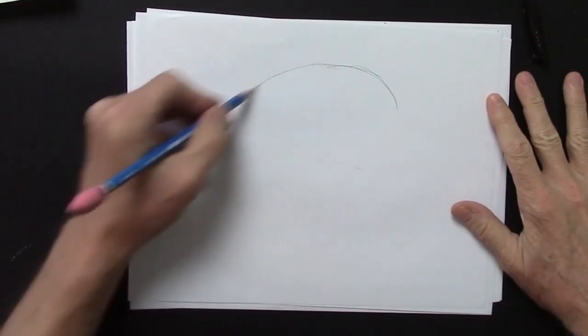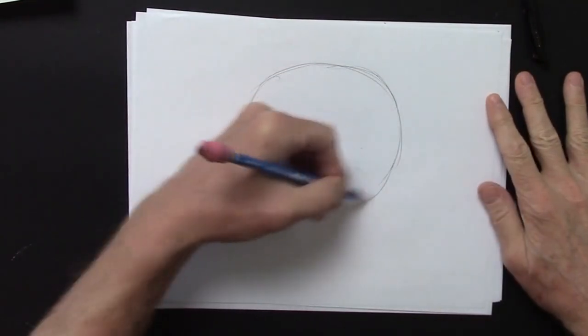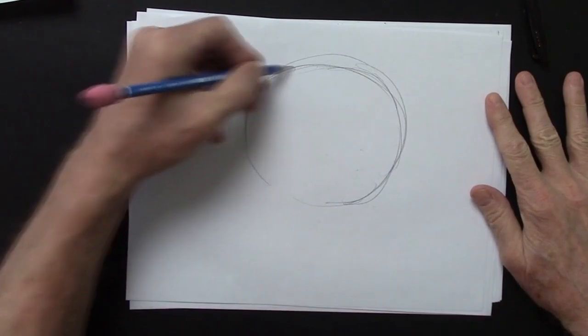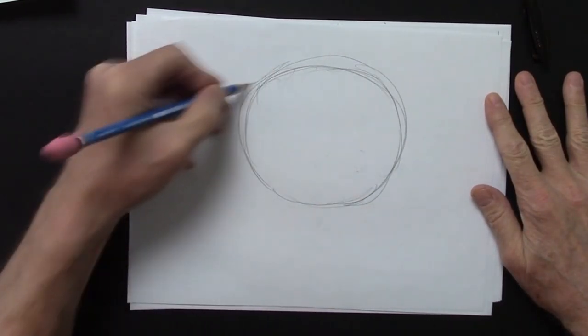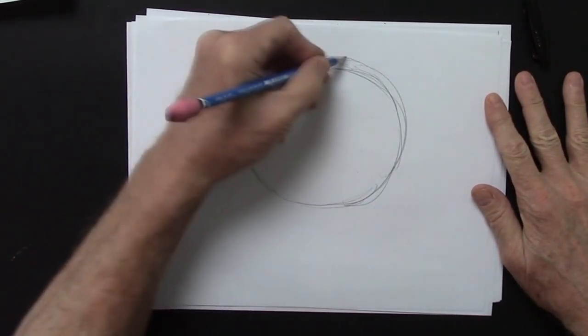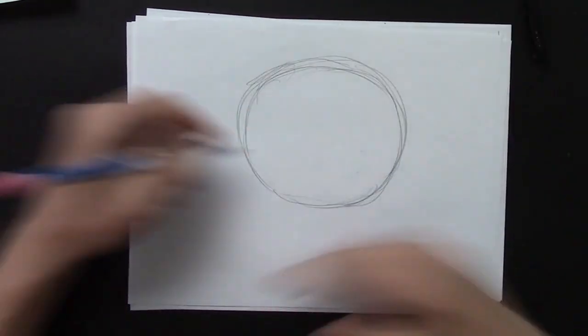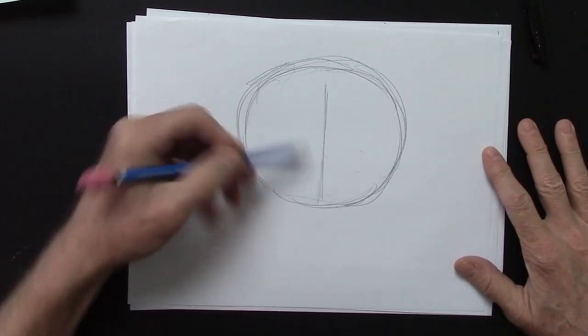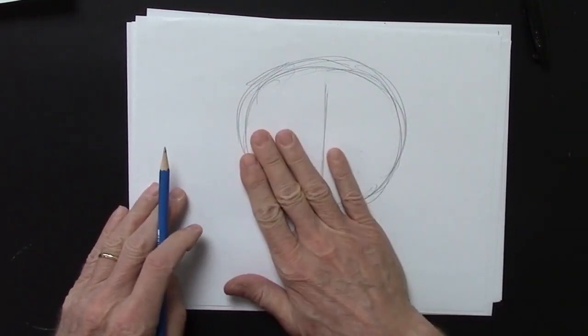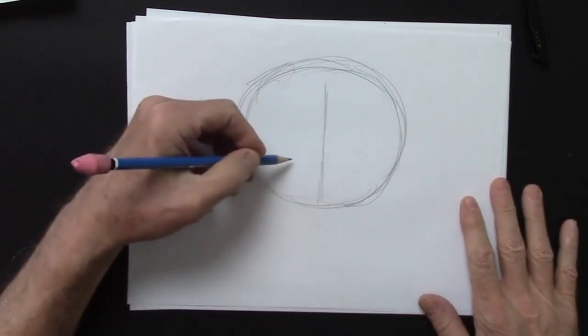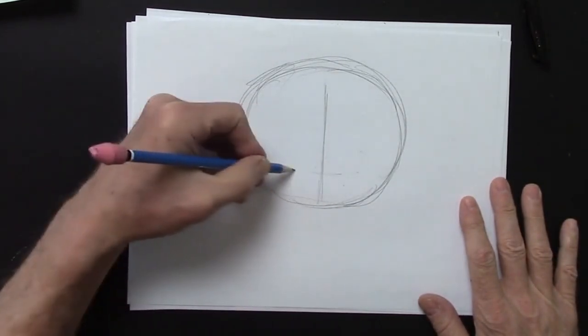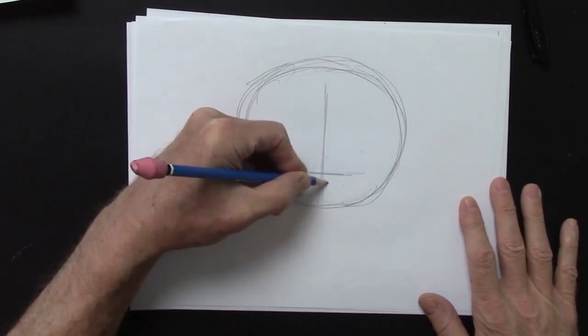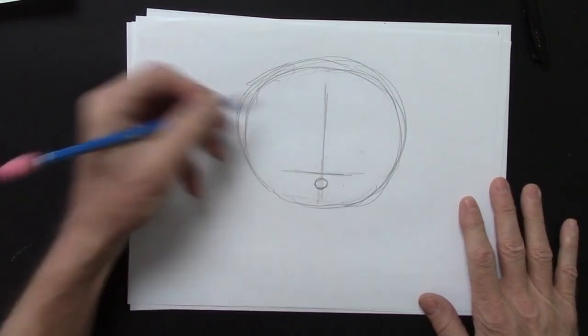We're going to start with an oval, a big oval-type head like this. Where can I put the rest of the body on such a small piece of paper? Well, we'll see. Here is the center line down the face to keep this side the same as that side, as far as size is concerned. Right here, put a little bit of eye line right here, and a little tiny bit of a nose. Just like that.